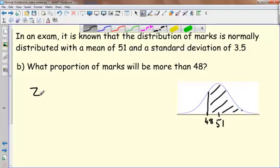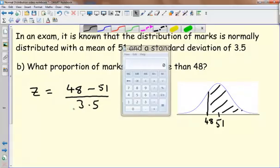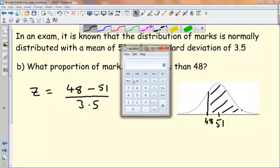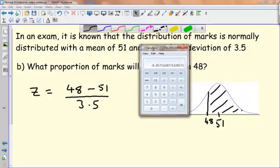If I find a z value for that, so how many standard deviations above or below the mean is it? The value is 48, the mean is 51, and standard deviation is 3.5. So 48 minus 51 is minus 3. Minus 3 divided by 3.5, so I get minus 0.8571.